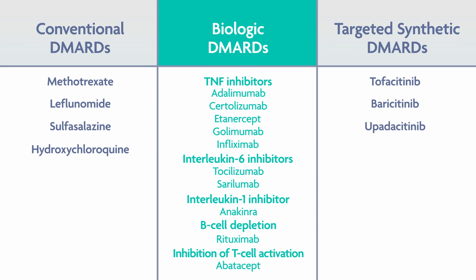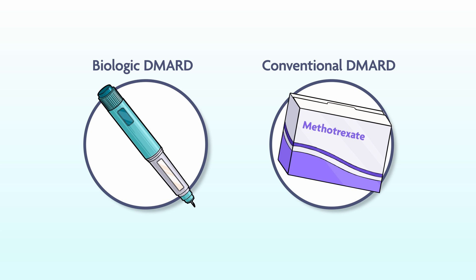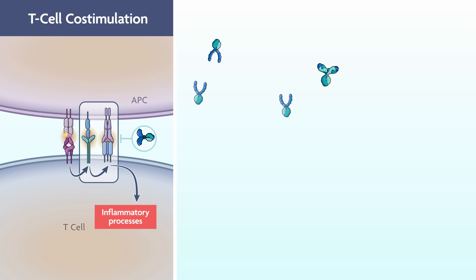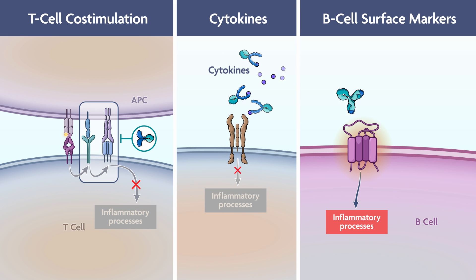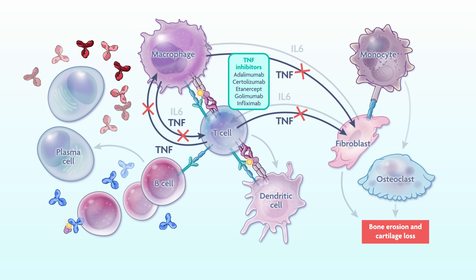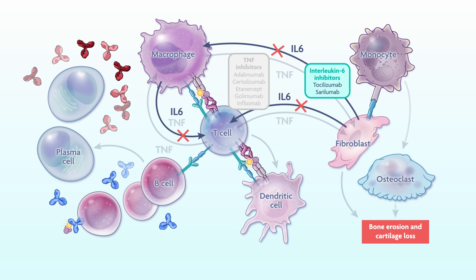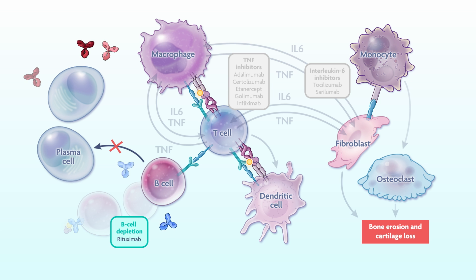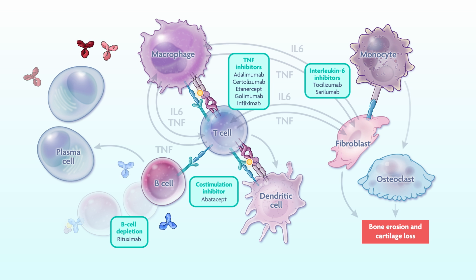Biologic agents introduced in the 1990s may be used alone or in combination with methotrexate or other conventional DMARDs. Currently available biologics target T-cell co-stimulation, specific cytokines, or surface markers on B-cells to interrupt the cycle of inflammation. Biologics are proteins that require systemic administration, either by intravenous or subcutaneous routes. We have five biologic agents that target TNF and block its functions in the immune system, two agents that block the IL-6 receptor, agents that can deplete B-cells — rituximab is the example there — and agents that can block co-stimulation of T-cells so that T-cells don't become activated.